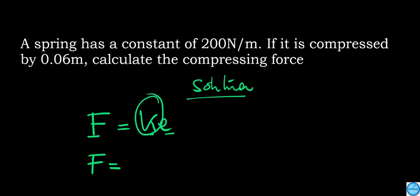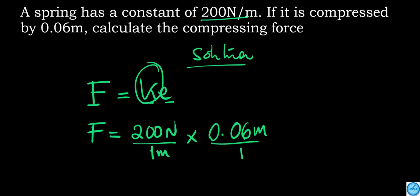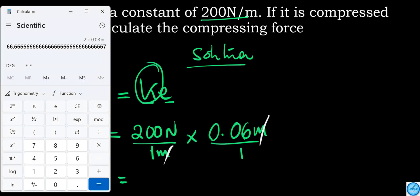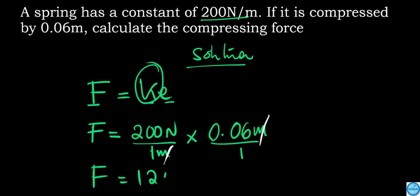We use F equals ke. The force is spring constant times extension. So F equals 200 Newtons per meter times 0.06 meters. Meter cancels, meaning F equals the product of 200 times 0.06, which gives us 12 Newtons.